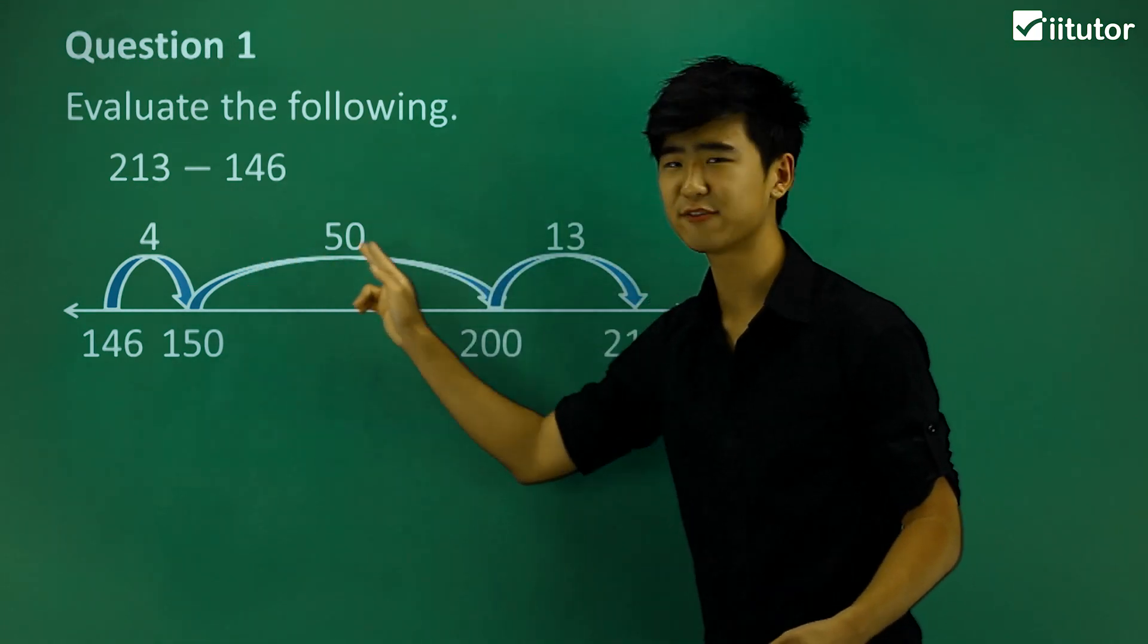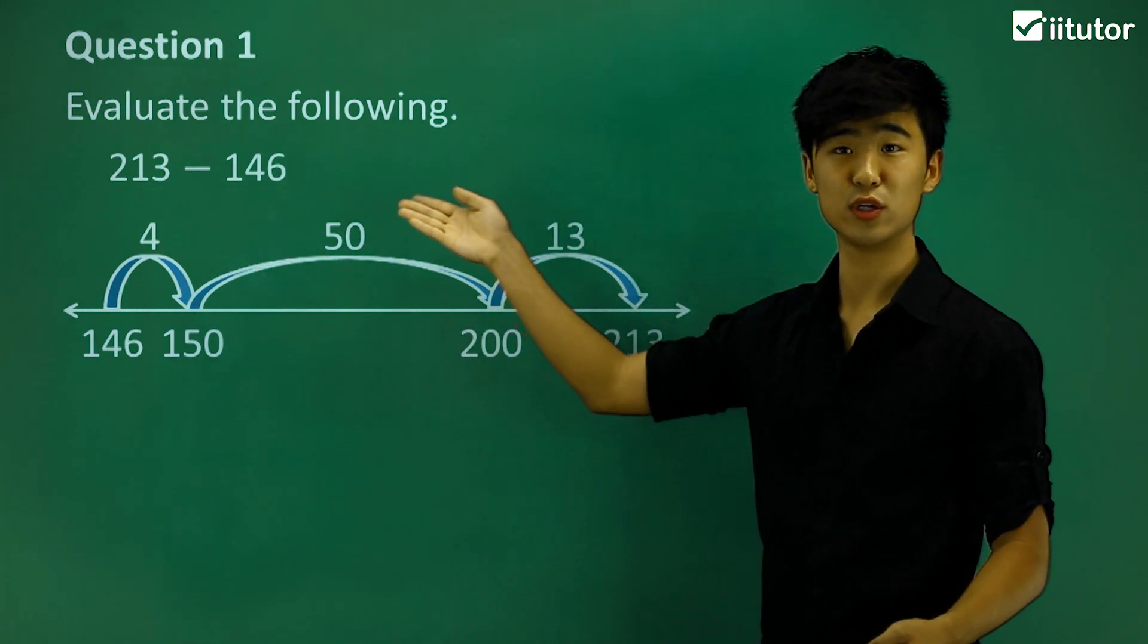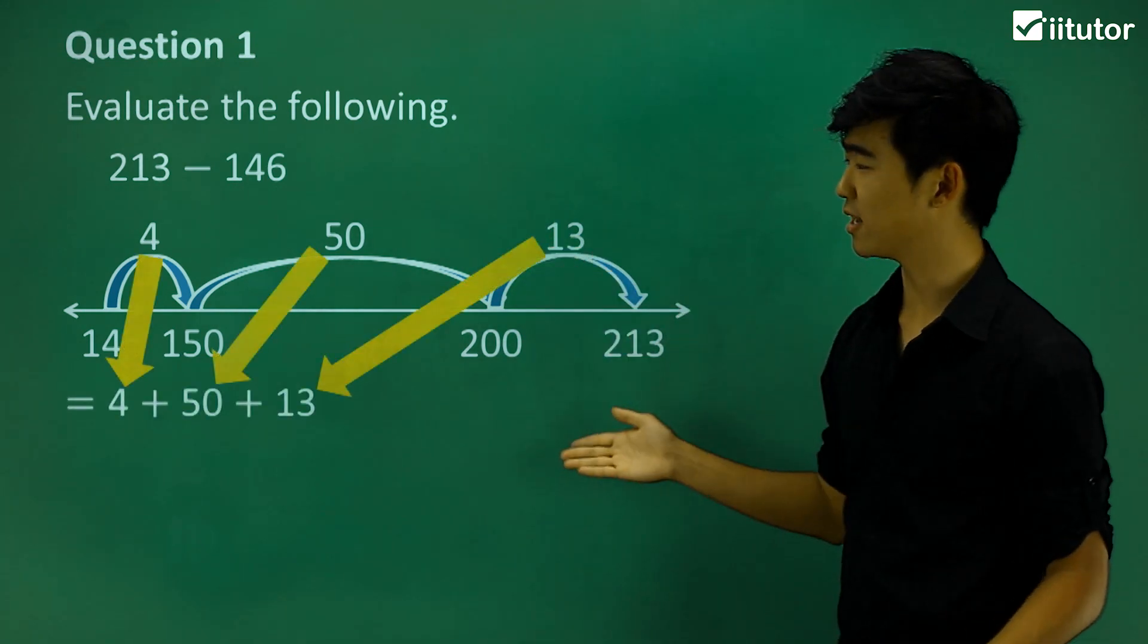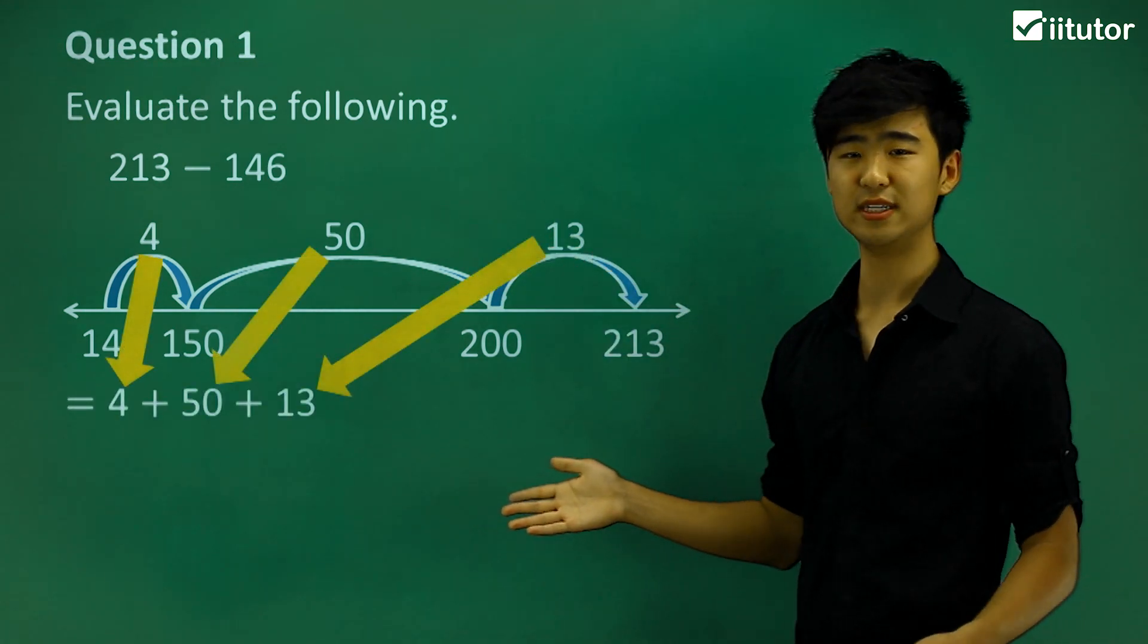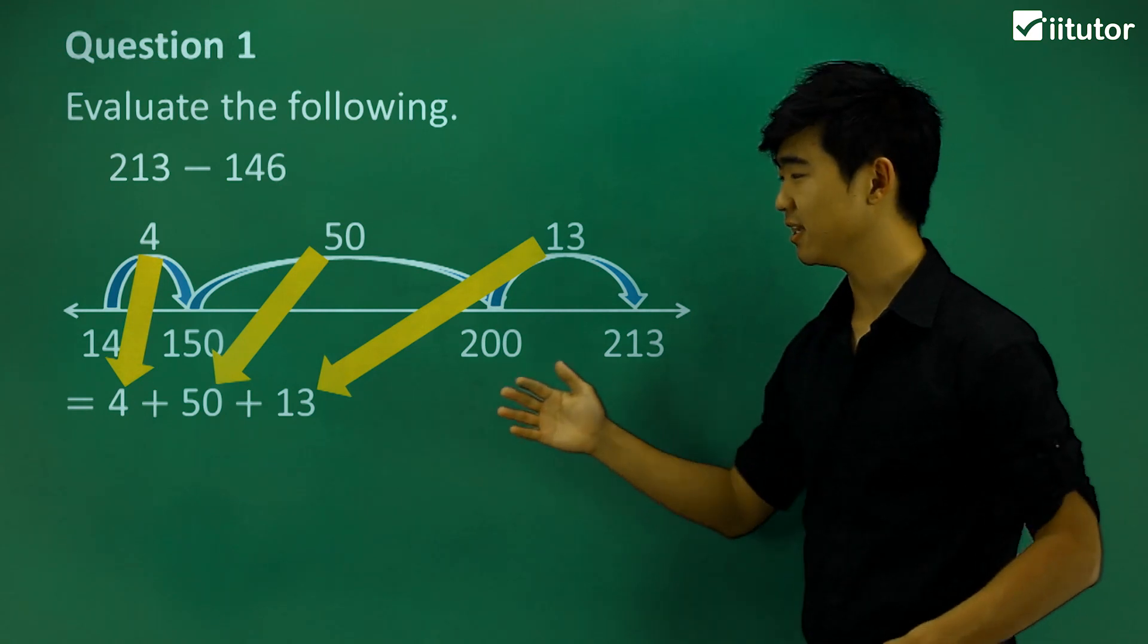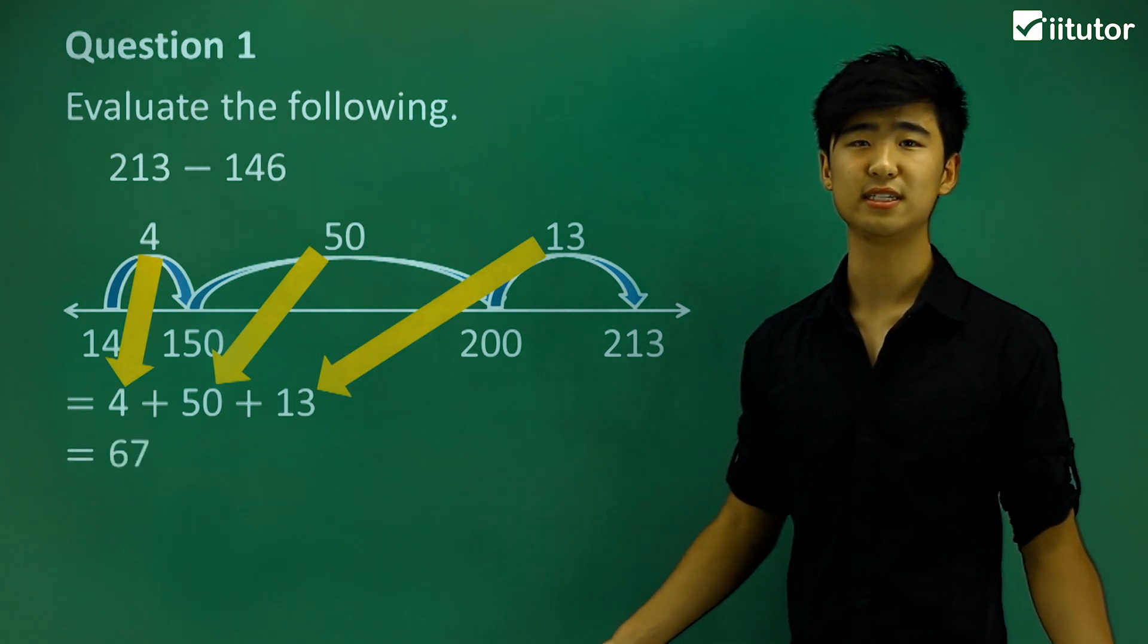If we add all these differences up, that should give us the answer to this question. So 4 plus 50 plus 13 gives us 67.